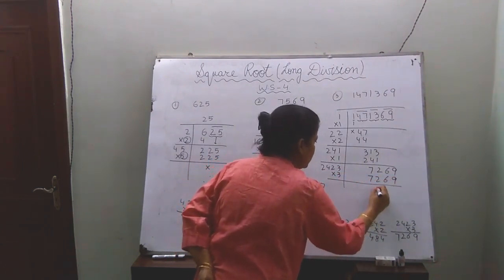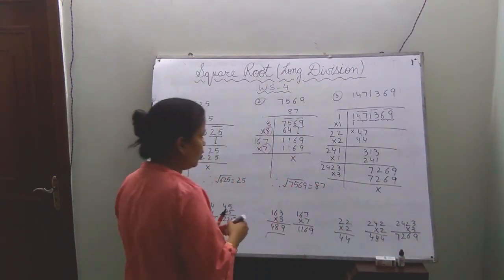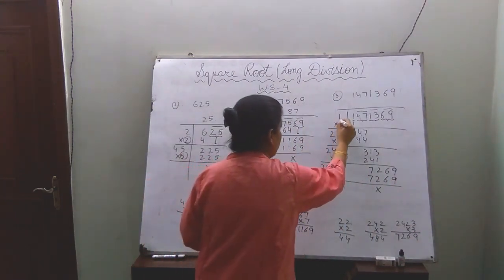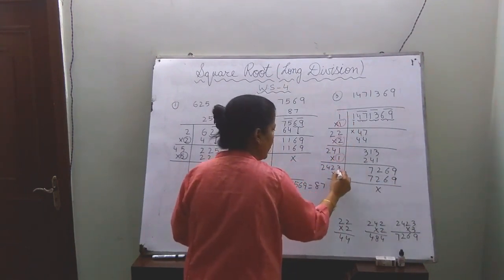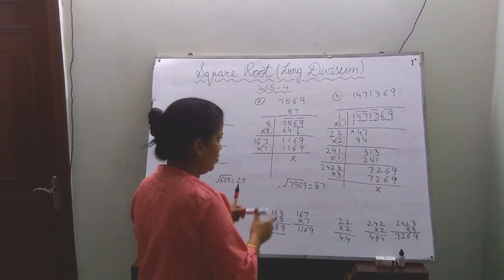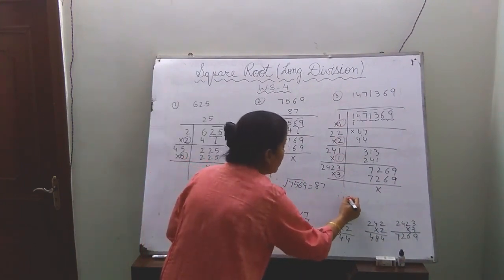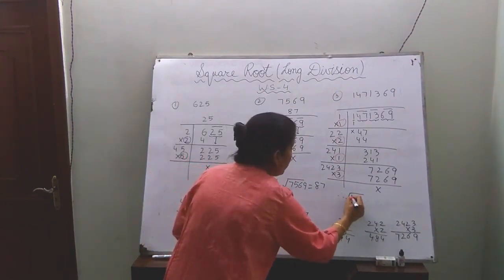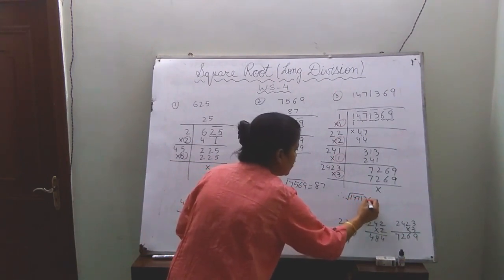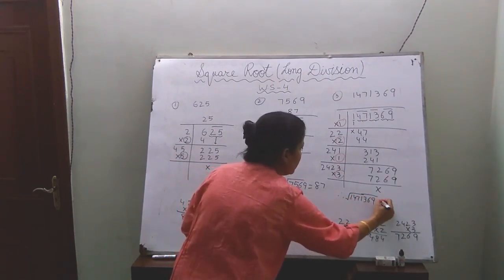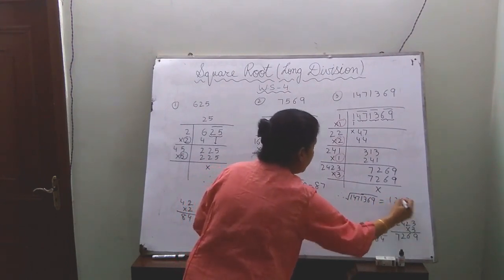We get 0. So the square root is 1, 2, 1 and 3. Therefore the square root of 1471369 is 1213.